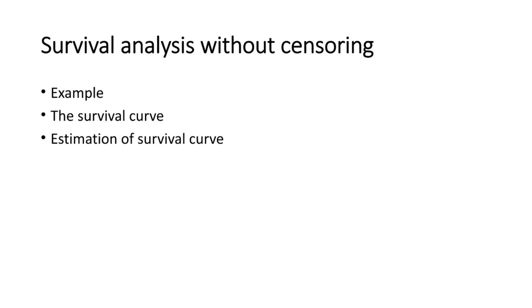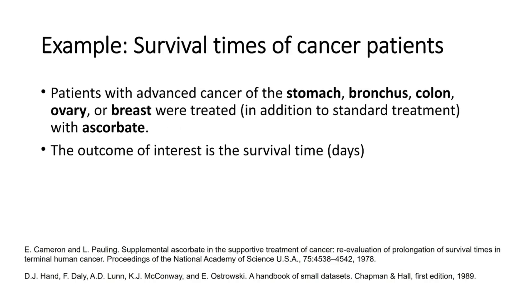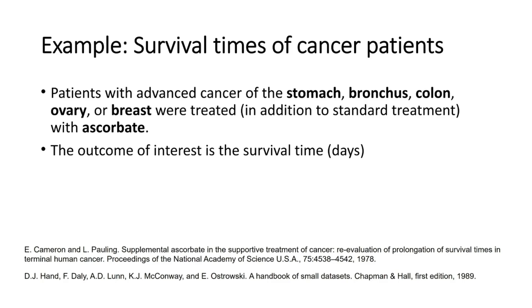Let's look at an example of survival times of cancer patients — patients with different advanced cancers of stomach, bronchus, colon, ovary, or breast, who were treated in addition to standard treatment with ascorbate. The outcome of interest is the survival time. Consider these two questions: what is the prognosis for a patient with a specific type of cancer, and do survival times differ by organ affected?